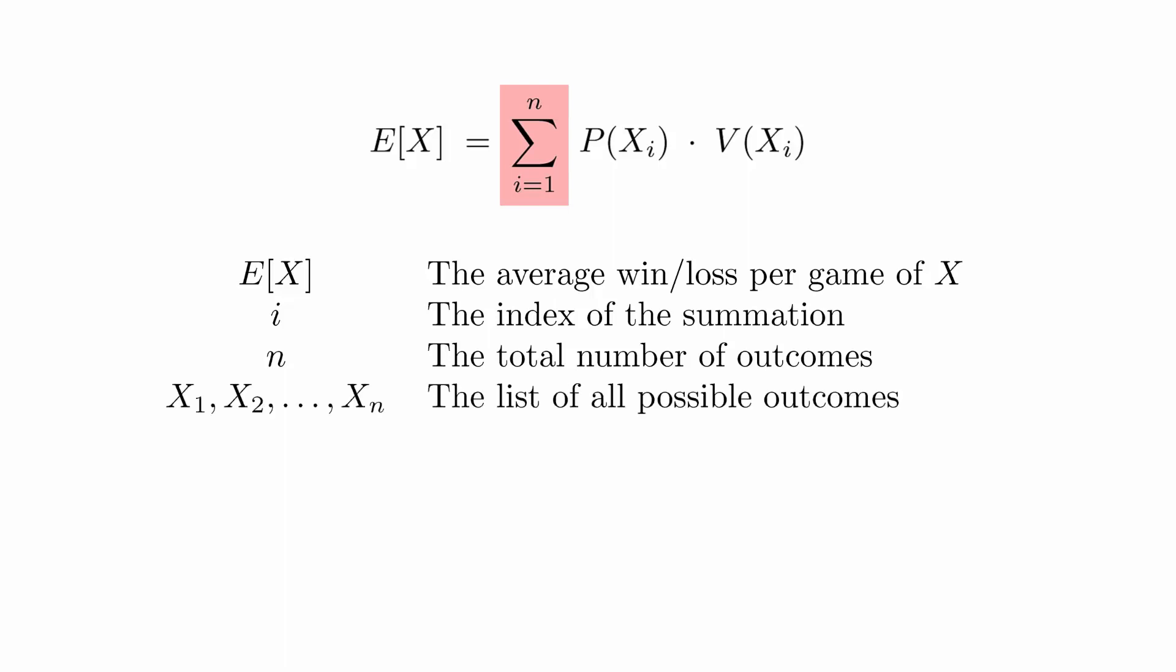In this case, we will label all the outcomes x1, x2 up through xn. In general, you can use any notation you want for the outcomes as long as you've accounted for all of them.